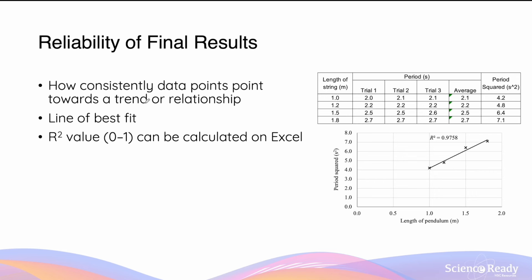Let's go back to the physics experiment using the simple pendulum, where we use the period of oscillation to calculate the g value — the force of gravity. For each length of string, I repeated the measurement three times (trial one, trial two, trial three) and obtained the average for each of the four string lengths. Looking at the three trials individually, they are fairly consistent: for example, 2.5, 2.5, 2.6 with an average of 2.5, and for 1.4 m: 2.7, 2.7, 2.7 with an average of 2.7. The individual sets of results are highly reliable.